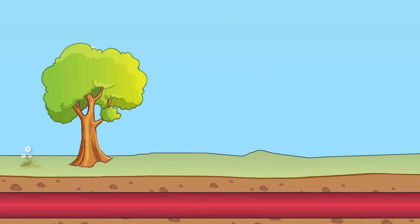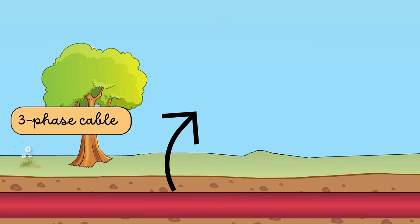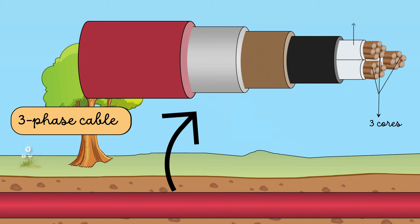The general construction of a three-phase cable consists of three cores, impregnated paper insulation, lead sheet, armoring and serving.